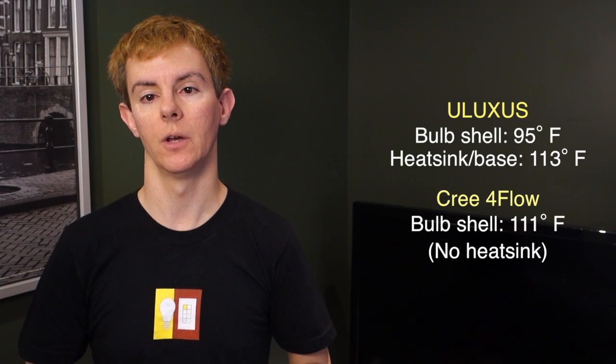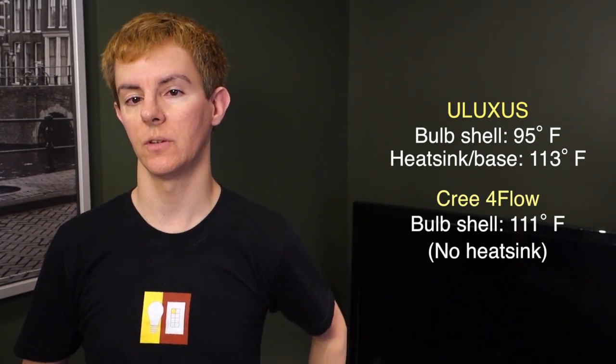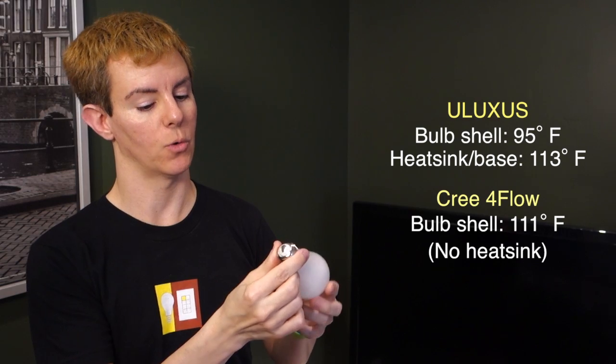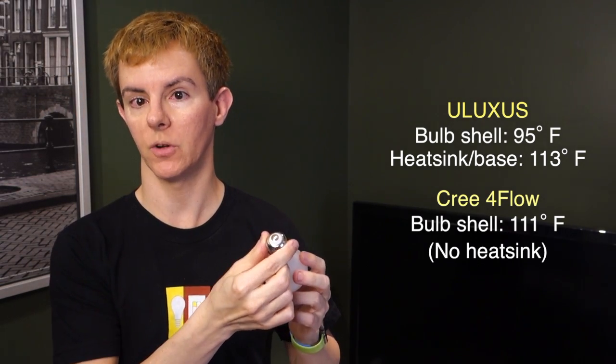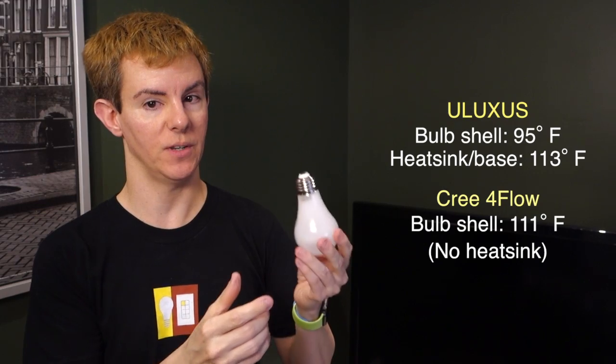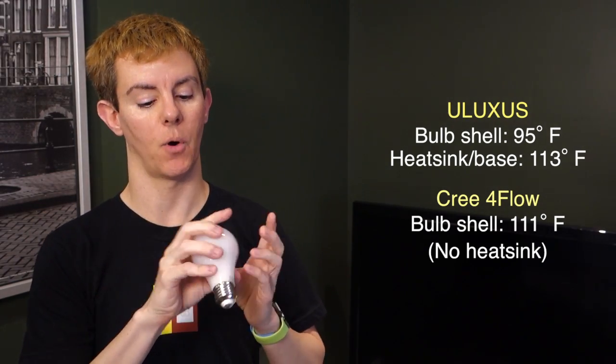So, its closest competitor, the Cree Foreflow with its vented design, got to 111 degrees on its bulb shell and it vented the heat directly out and it didn't vent it down to the base. So, that means this was two degrees cooler than the bulb shell or two degrees warmer than the bulb shell of the Cree Foreflow, but still a lot cooler in general, 15 degrees cooler at the part that you would be holding it at. That's really impressive.